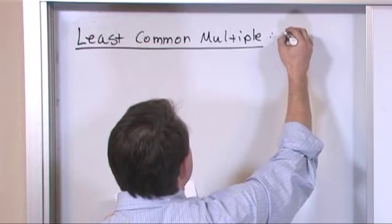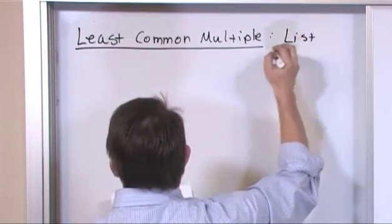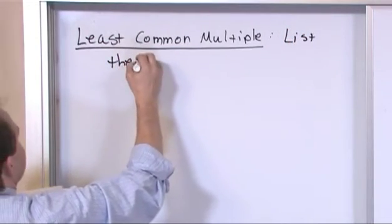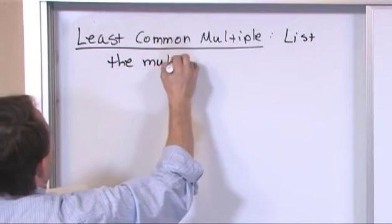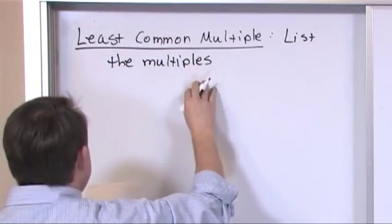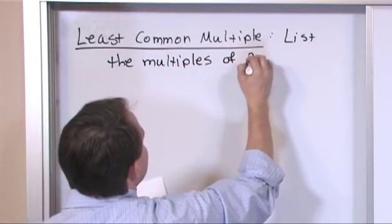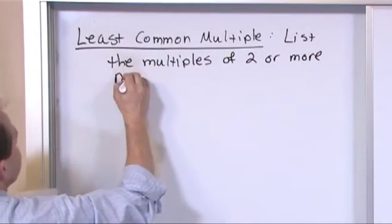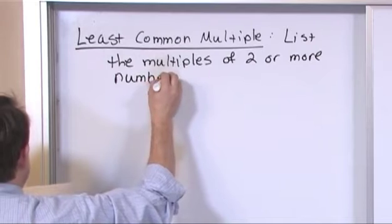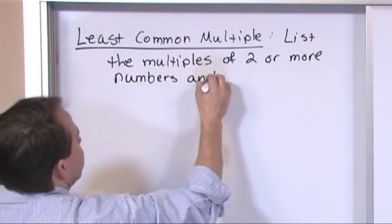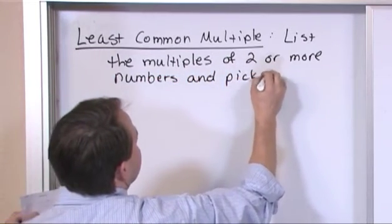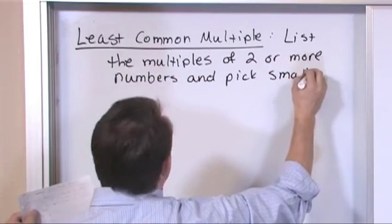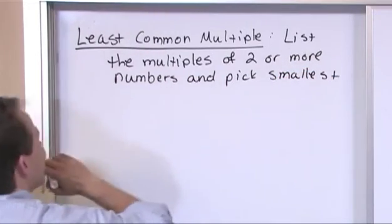So, what we do is we list the multiples of two or more numbers and we pick the smallest number.